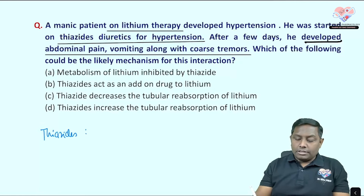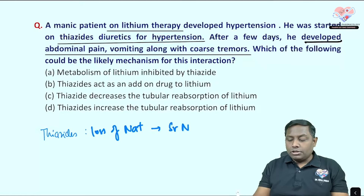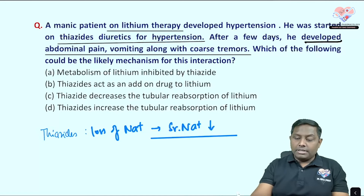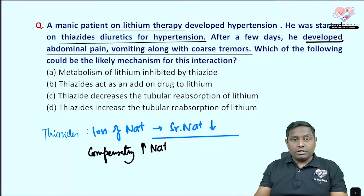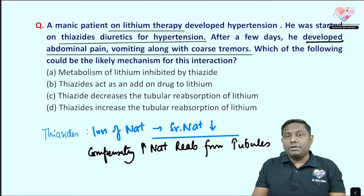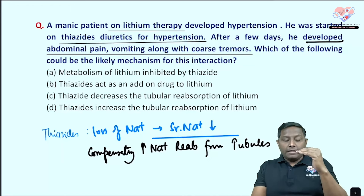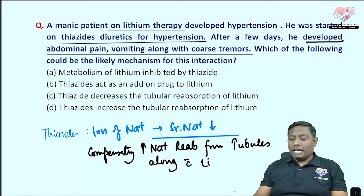Thiazide diuretics cause loss of sodium, leading to low serum sodium. As a compensatory mechanism, the body increases tubular reabsorption of sodium. Since the body cannot differentiate between lithium and sodium (they are in the same group in the periodic table), lithium is reabsorbed along with sodium.